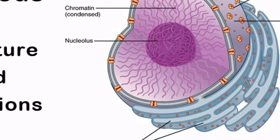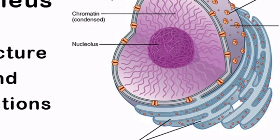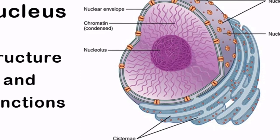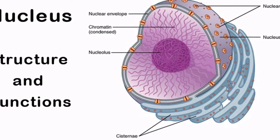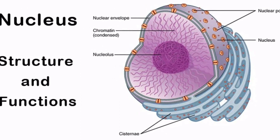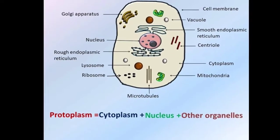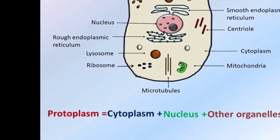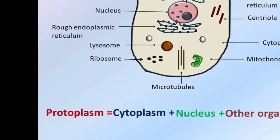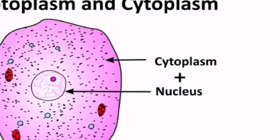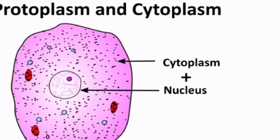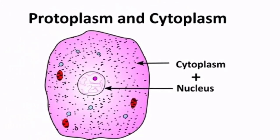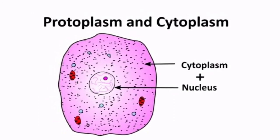Nucleus, in addition to its role in inheritance, acts as the control center of the activities of the cell. The entire content of a living cell is known as protoplasm. Protoplasm is the physical basis of life — it includes the cytoplasm and nucleus. Protoplasm is called the living substance of the cell.